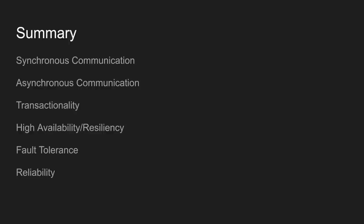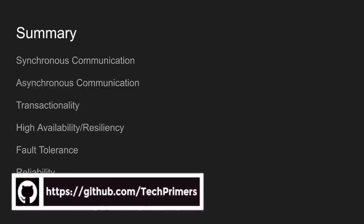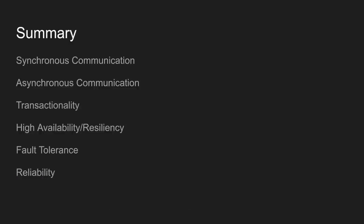To summarize: we discussed different communication strategies for microservices. Transactionality ensures transactions complete without errors. High availability ensures your service is always present to serve requests. Resiliency ensures another data center can serve requests if one goes down. Fault tolerance prevents cascaded errors across microservices. Reliability ensures transactions are successful every single time. These are the key concepts to consider while designing microservices communication. If you found this video interesting, please like and subscribe.